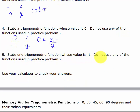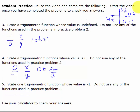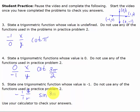State a trig function whose value is negative 1, not using any functions from practice 2. I need to use an ordered pair containing negative 1. Using the ordered pair from 3 pi over 2, which is 0, negative 1, the y value is negative 1 and r is 1. So y over r is sine, and the sine of 3 pi over 2 equals negative 1.